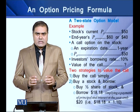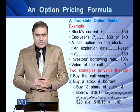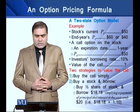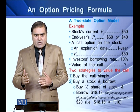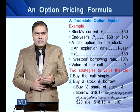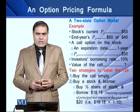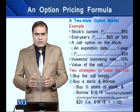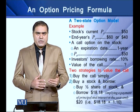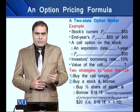Two strategies are presented in this example. Strategy one is to simply buy the call. The second strategy includes two steps: the first is to buy one-half share of the stock, and the second step is to borrow a certain amount, which in our example is $18.18. This $18.18 is the present value of the amount needed to pay off the borrowing including principal.